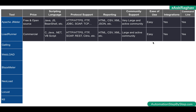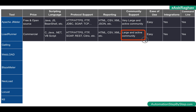When we talk about LoadRunner, it is also a very commonly used performance testing tool and it is a commercial tool. Its primary languages are C, Java, .NET, and VBScript, with support for additional languages as well. It supports a wide range of protocols including HTTP, HTTPS, FTP, REST, Citrix, and more. Reporting includes all major formats such as HTML, CSV, and XML. It has a large and active community, is very easy to use with a good UI, supports integrations, and has command line options.